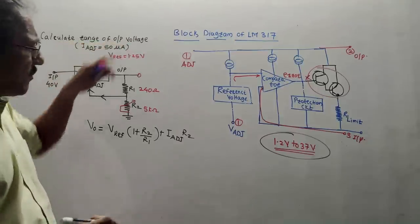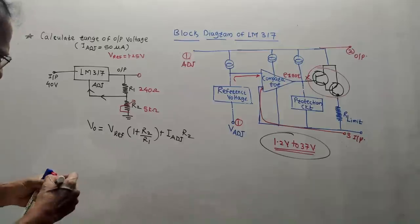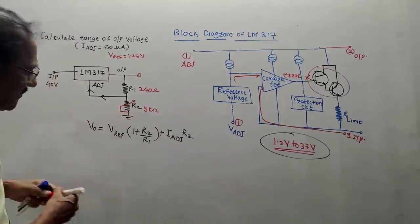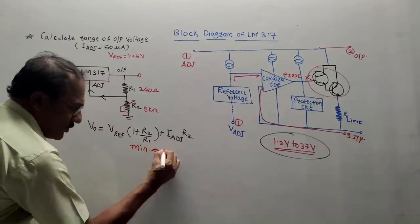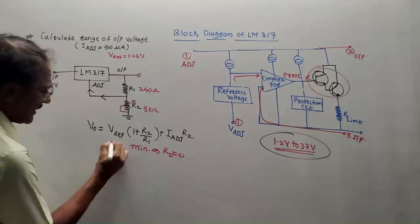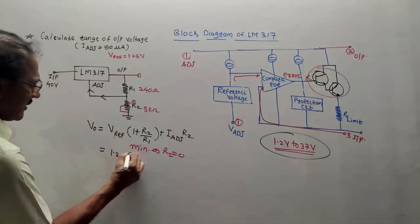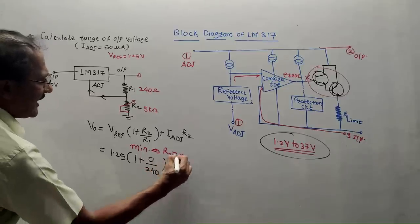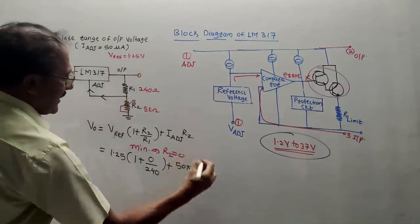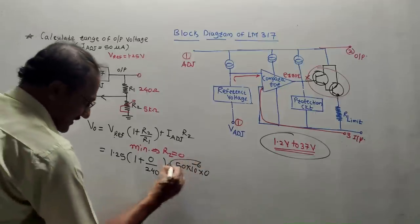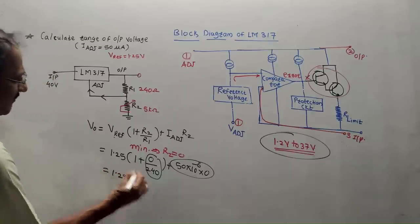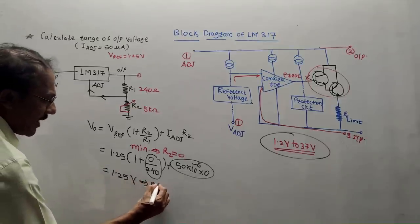The question asks for the range — minimum to maximum. R1 is fixed; we can only change R2. For the minimum output voltage, put R2 = 0. So V_out = 1.25 × (1 + 0/R1) + 50×10⁻⁶ × 0. Both variable terms vanish, giving 1.25 × 1 = 1.25 V. This is the minimum output voltage.